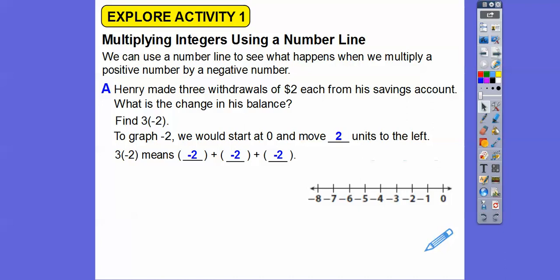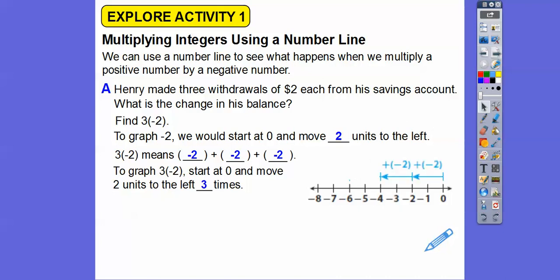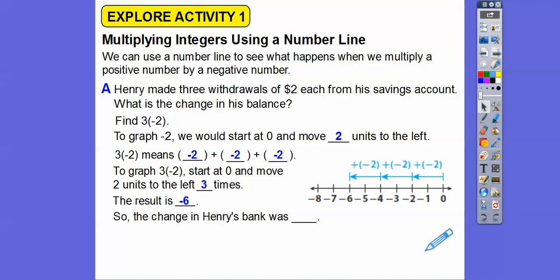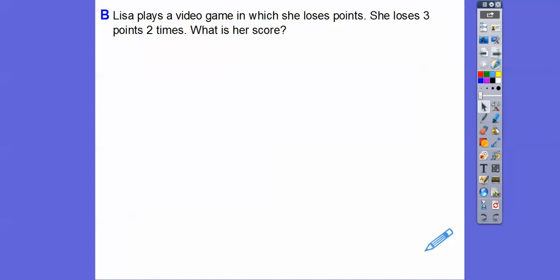Three times negative two is the same as negative two plus negative two plus negative two. To graph three times negative two, we start at zero and move two units to the left three times. One, two, three — there's three times negative two. The result is negative six. The change in Henry's bank account is negative six dollars. Try to always answer the question in the context of the problem — if it's a word problem, make sure you know what your answer means.